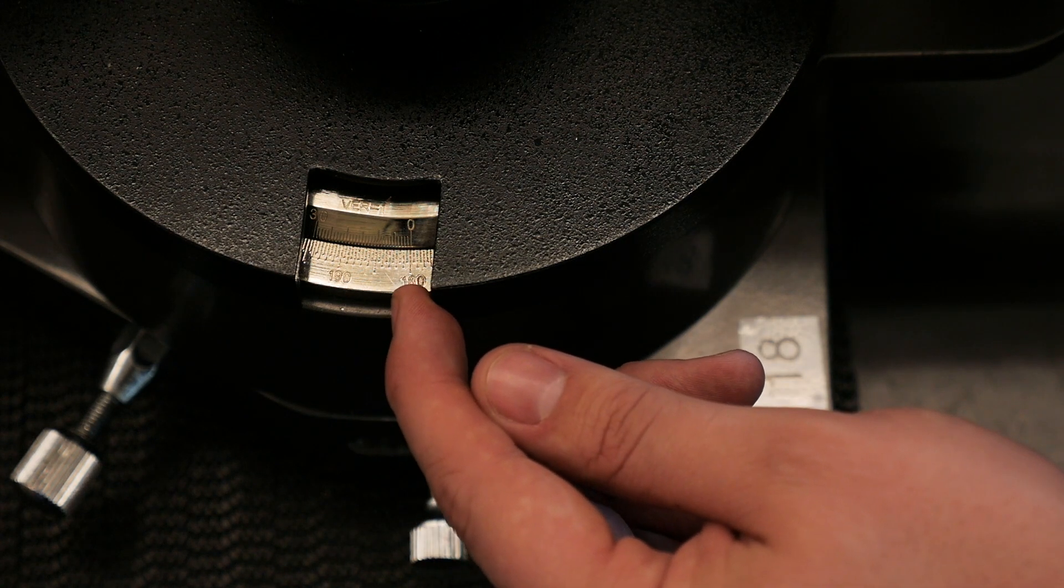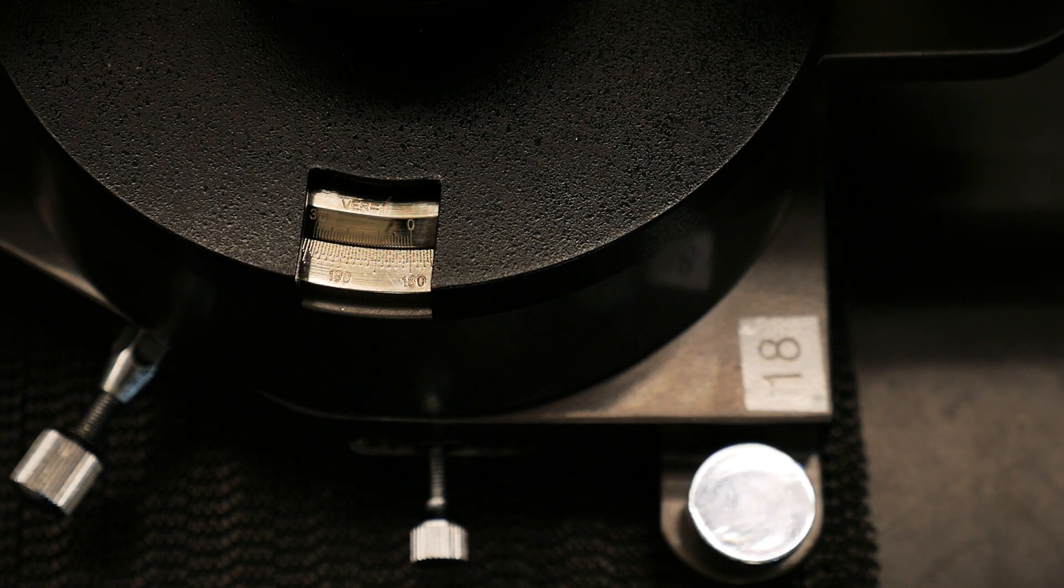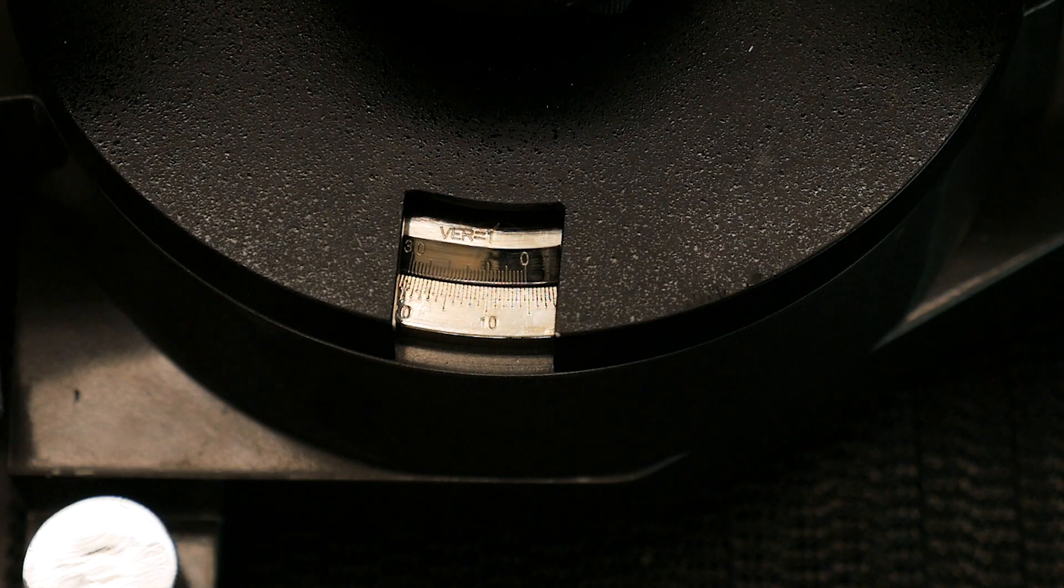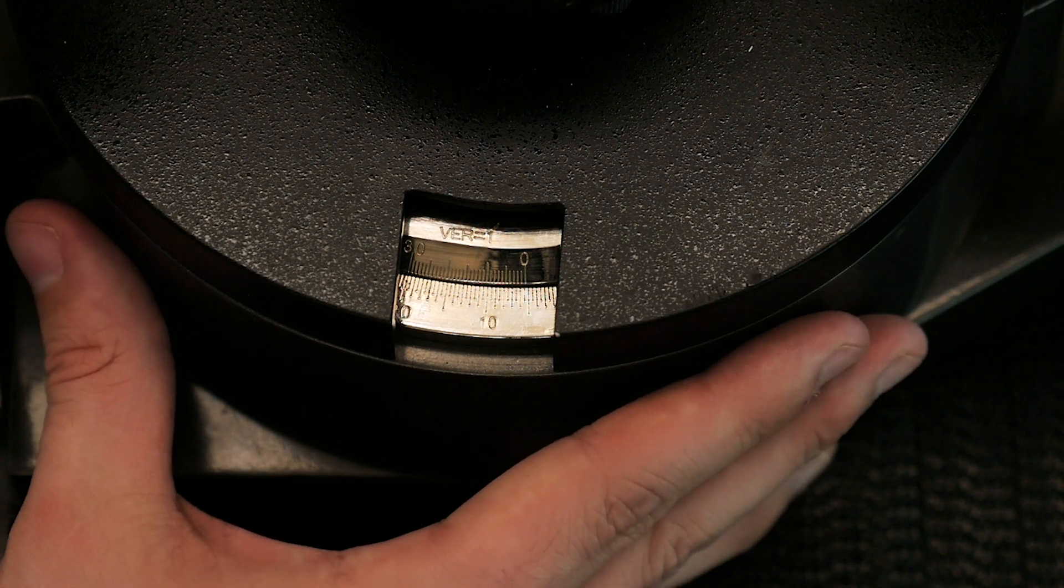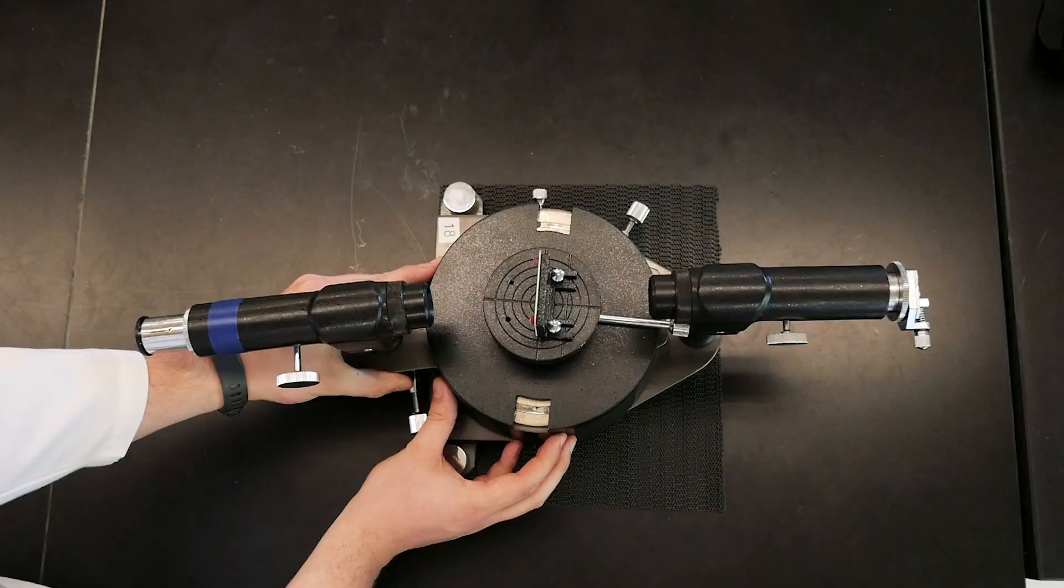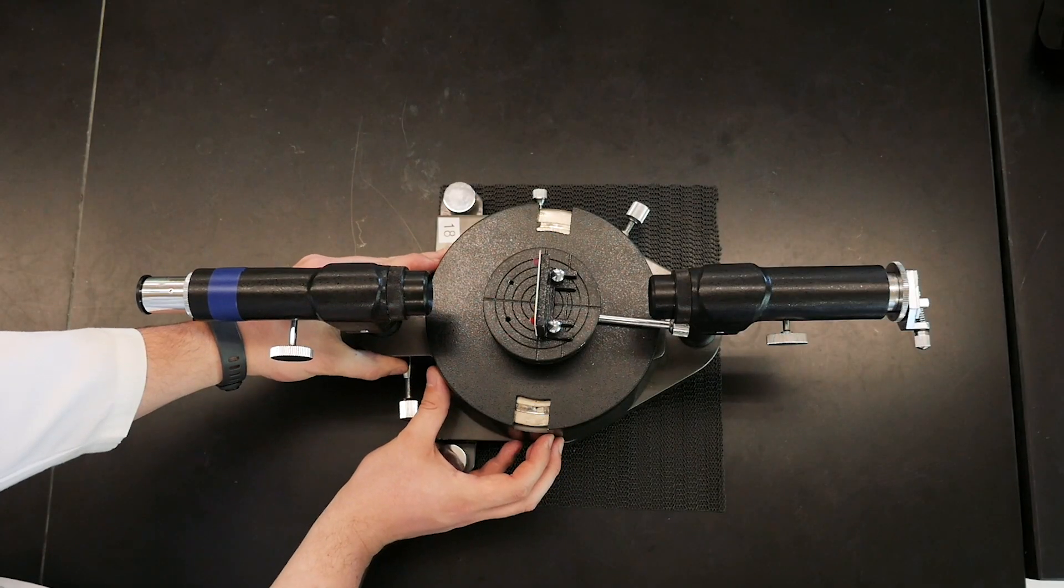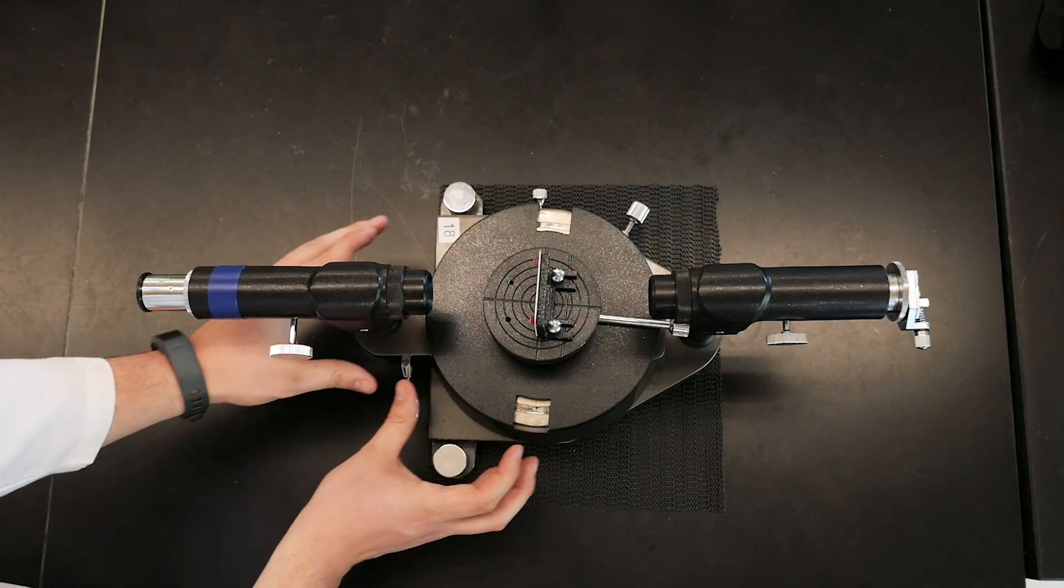The angle can be read by looking for the point where the zero on the top scale crosses the bottom scale. Here you can see that the reading is about 5.2 degrees, so we'll adjust to zero. All right, now that the instrument is aligned, we'll need to make sure it's calibrated properly.